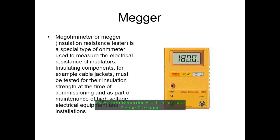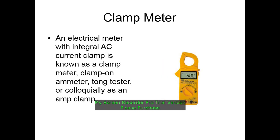A clamp meter is an electric meter with an integral AC current clamp. An electric meter with an integral AC current clamp is known as a clamp meter, also known as a clamp-on ammeter.